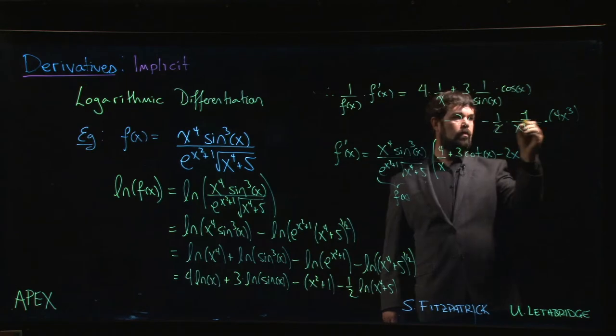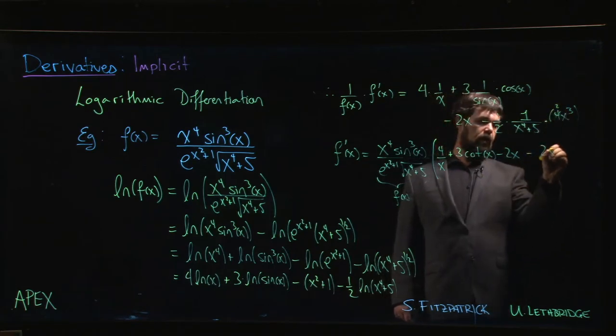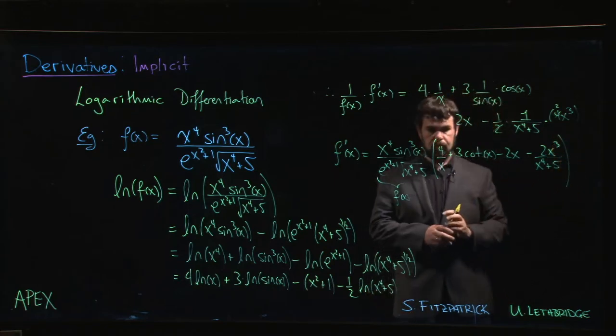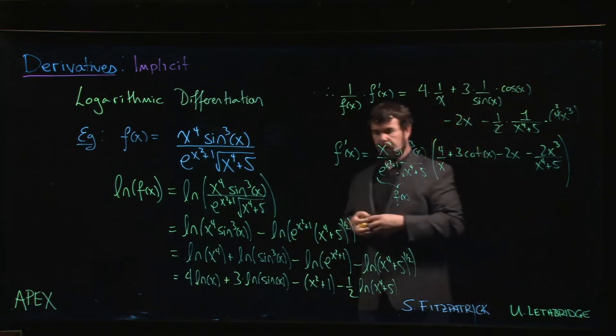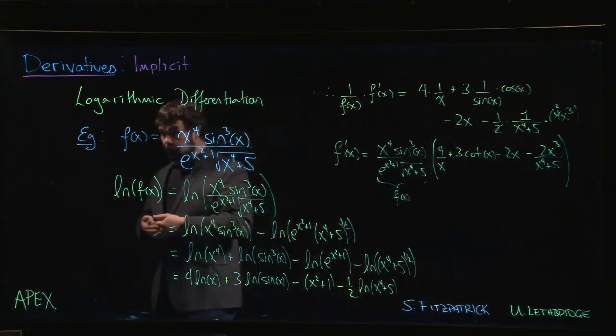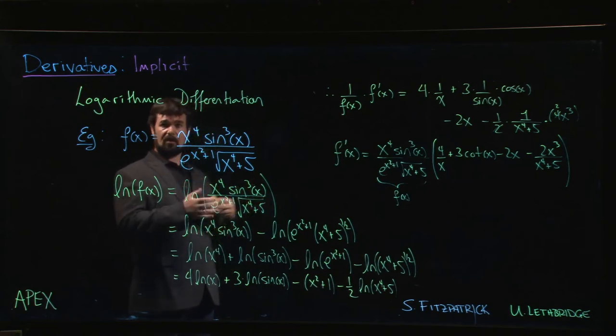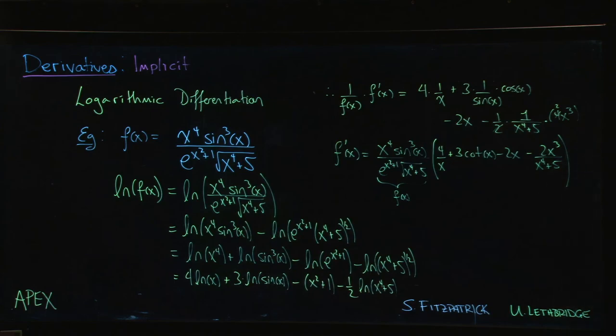The 2 cancels with the 4—minus 2x cubed over x to the 4 plus 5. And there's your derivative. So I think compared to doing product rule, quotient rule, chain rule, that's a lot less work.